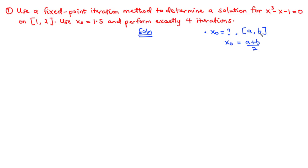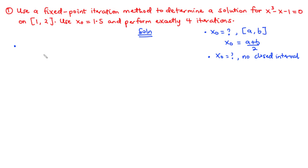If neither x₀ nor the closed interval is given, you first find the closed interval and then determine x₀ from it. Whenever x₀ is given, you can proceed with the solution regardless. In this problem, we are given f(x) = x³ - x - 1 = 0, which is our root finding problem, and we need to transform it into a fixed point problem.